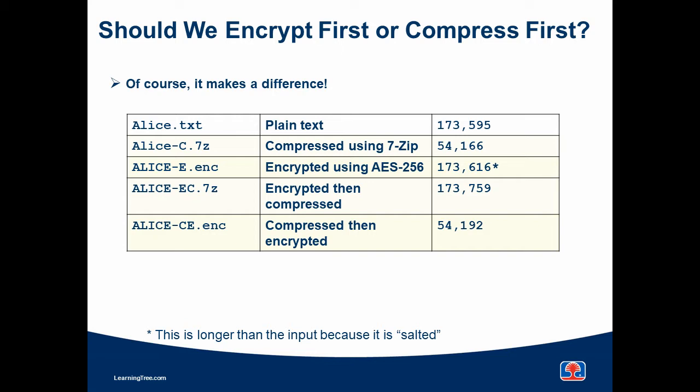When I compressed it and then encrypted it, only a little tiny bit was added over the compressed file because there's some overhead in compression. The moral of this story is: if you want to encrypt and compress, be absolutely certain to compress first. Tools like 7-zip and other file compression utilities that also encrypt have this feature built in as the way they work. I hope this has helped you understand compression and encryption and whether we should encrypt first or compress first.